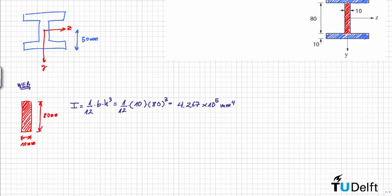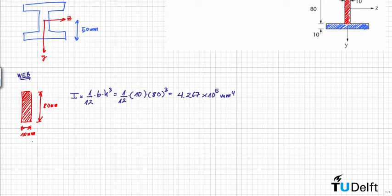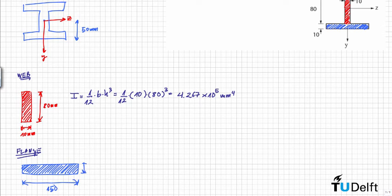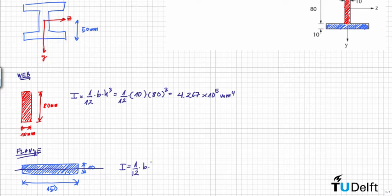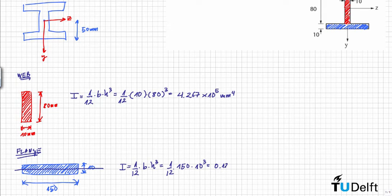Now we can calculate the moment of inertia of the flange, starting with the upper one. The moment of inertia of this section with respect to its own axis is equal to 1/12 times BH³, which is 1/12 times 150 — this is the base — times 10 to the power of 3.